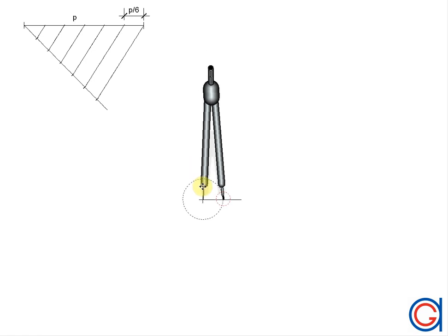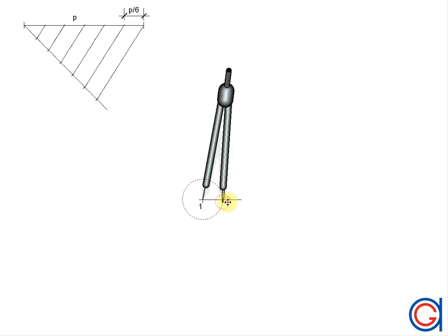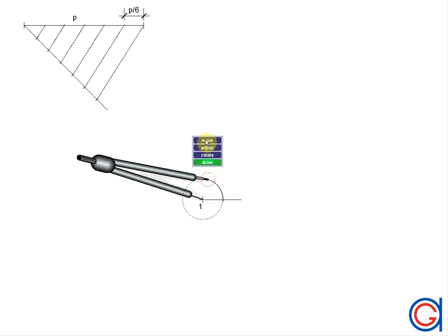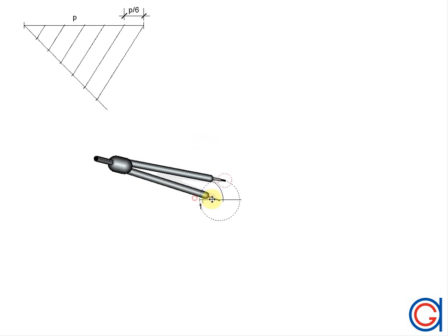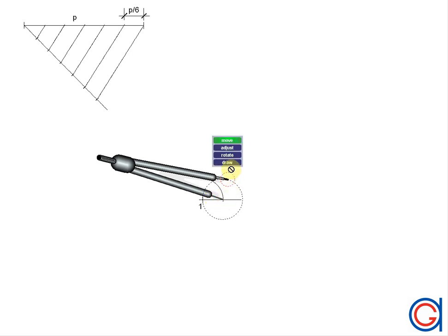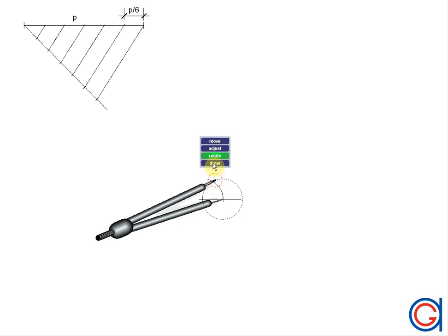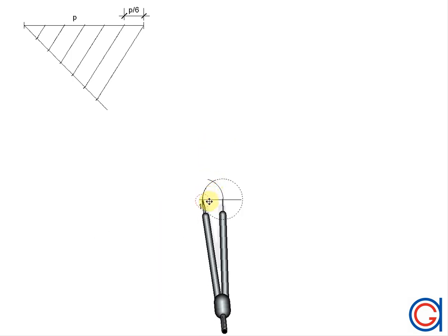Now we are going to draw an equilateral triangle using this length one sixth of P. With our compass centered on point one, we scribe an arc to the left, which cuts our horizontal line at point two, which will be the second center. We continue the arc above as shown. Now with our compass set on the second center, we scribe another arc to the right until it cuts our previously drawn arc at point zero.